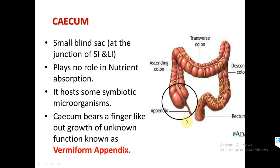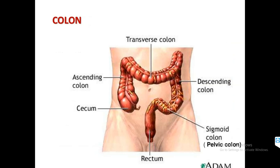The vermiform appendix is a finger-like outgrowth coming out of the cecum. Then comes the second part — the colon. The colon is divided into four types based on structure: ascending, descending, transverse, and sigmoid. Ascending means going from lower to higher position; transverse means lying sideways; descending means coming from upward to downward; and sigmoid means it turns in an S-shaped sigmoid position.